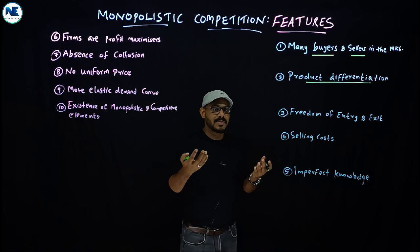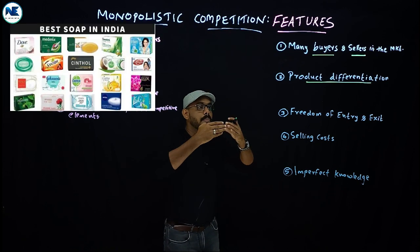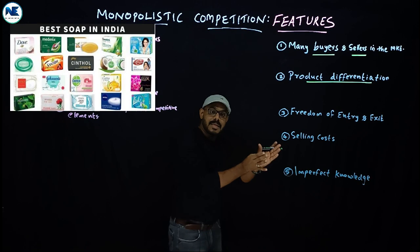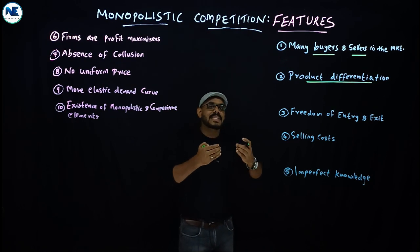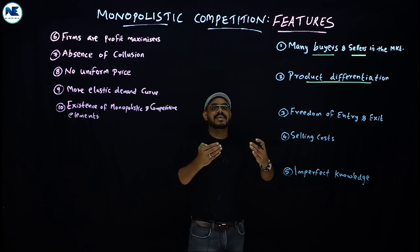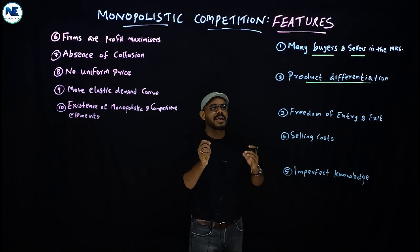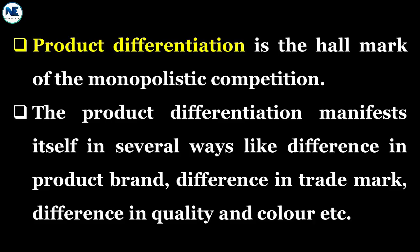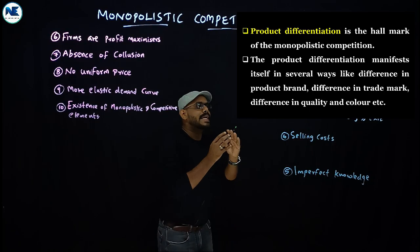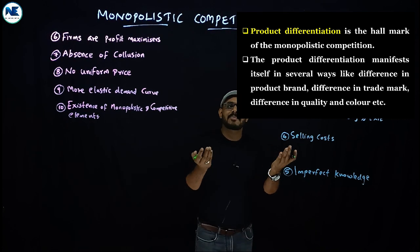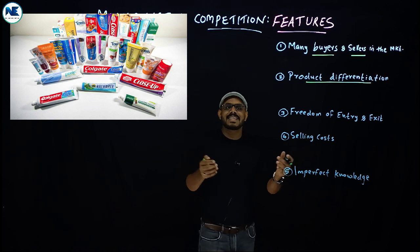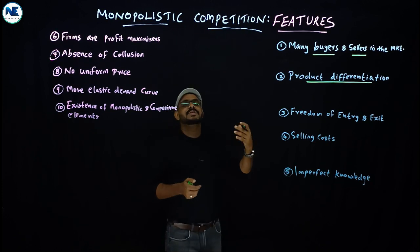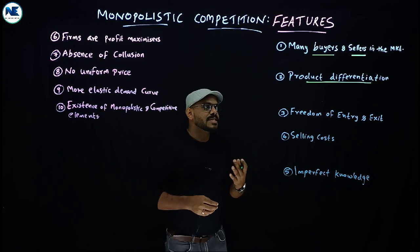Products are close substitutes but not perfect substitutes. Each firm maintains a uniqueness in its product. For example, toothpaste or soap — the basic nature of the product is the same, but the packing, designing, and branding differ. Even restaurants offer the same basic food service but differentiate through various elements. Product differentiation is very important here — products are slightly different from other firms' products even though the basic nature is the same.